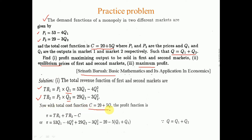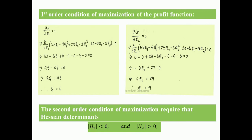Since the total cost function is C = 20 + 5q, the profit function is π = 53q1 − 4q1² + 29q2 − 3q2² − 20 − 5(q1 + q2). Applying the first order condition, we take the partial differentiation of the profit function with respect to q1 and set it equal to 0. Differentiating gives 53 − 8q1 − 5 = 0, which simplifies to 48 − 8q1 = 0.